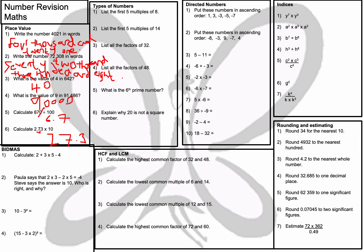We are now going to be looking at BIDMAS. Question 1: calculate 2 + 3 × 5 − 4. I'm going to do 3 times 5 first, which is 15. Then 2 add 15 subtract 4 — so 2 add 15 is 17, and 17 minus 4 is 13.